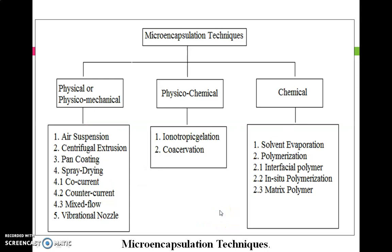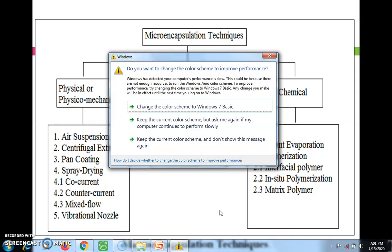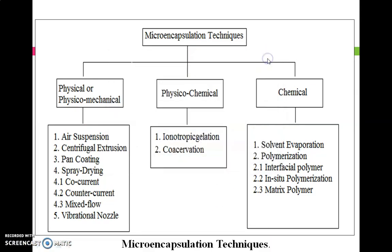Methods available for microencapsulation are categorized into: physical or physico-mechanical methods — including air suspension, centrifugation, pan coating, and spray drying; physico-chemical methods — including ionotropic gelation and coacervation phase separation; and chemical methods — including solvent evaporation and polymerization.